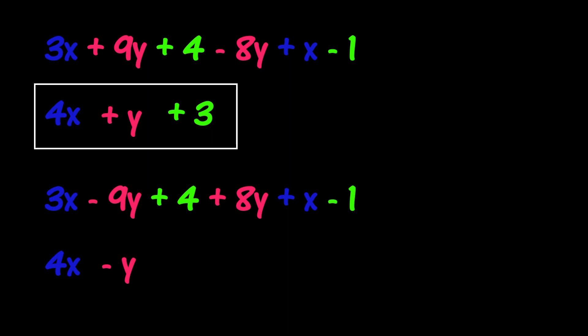And that's okay, because when simplifying algebraic expressions, negative terms are allowed. For the last part, we have our constants. Our constants are the same as the example above. 4 minus 1 is 3. So, our simplified expression this time around is 4x minus y plus 3.